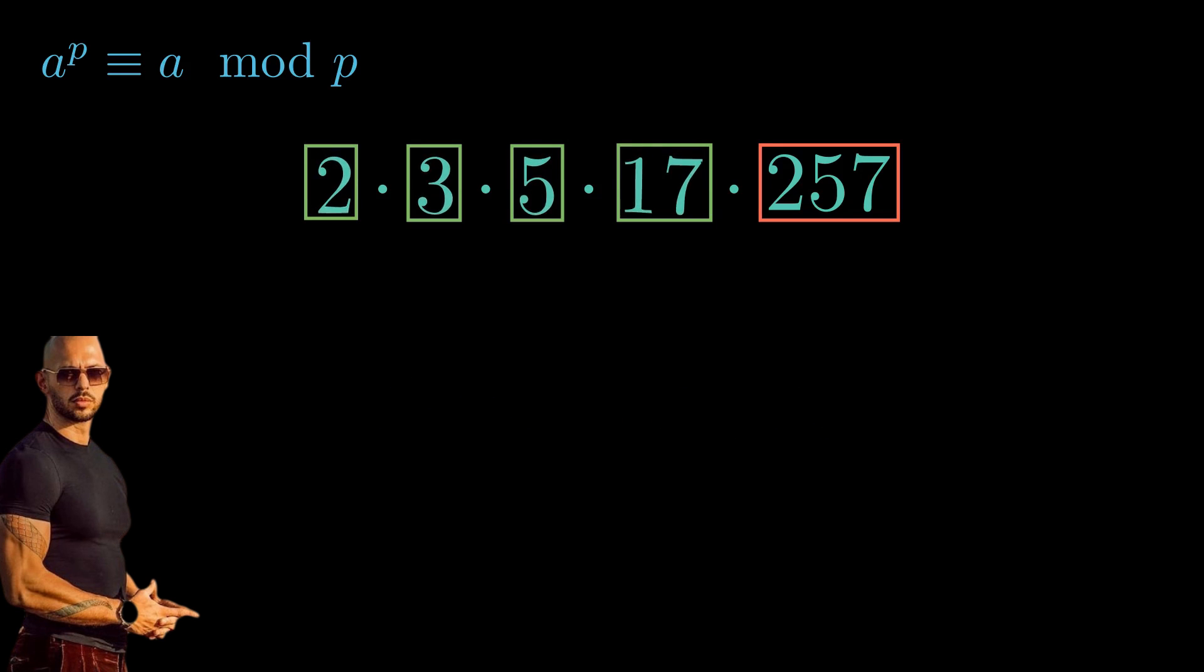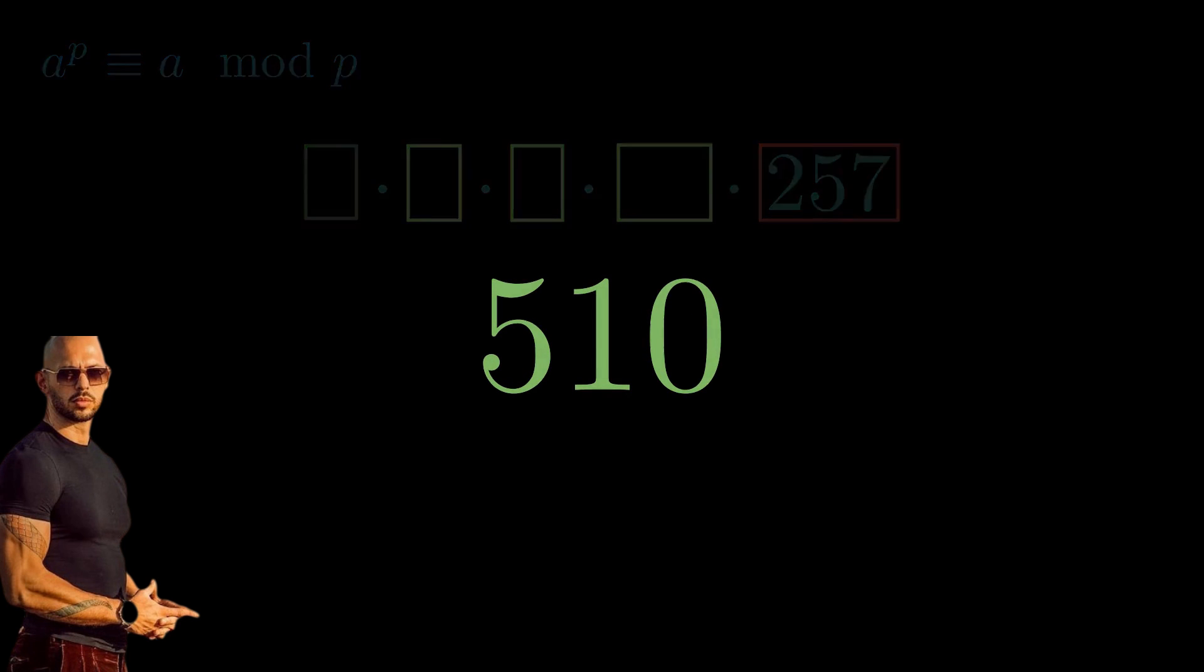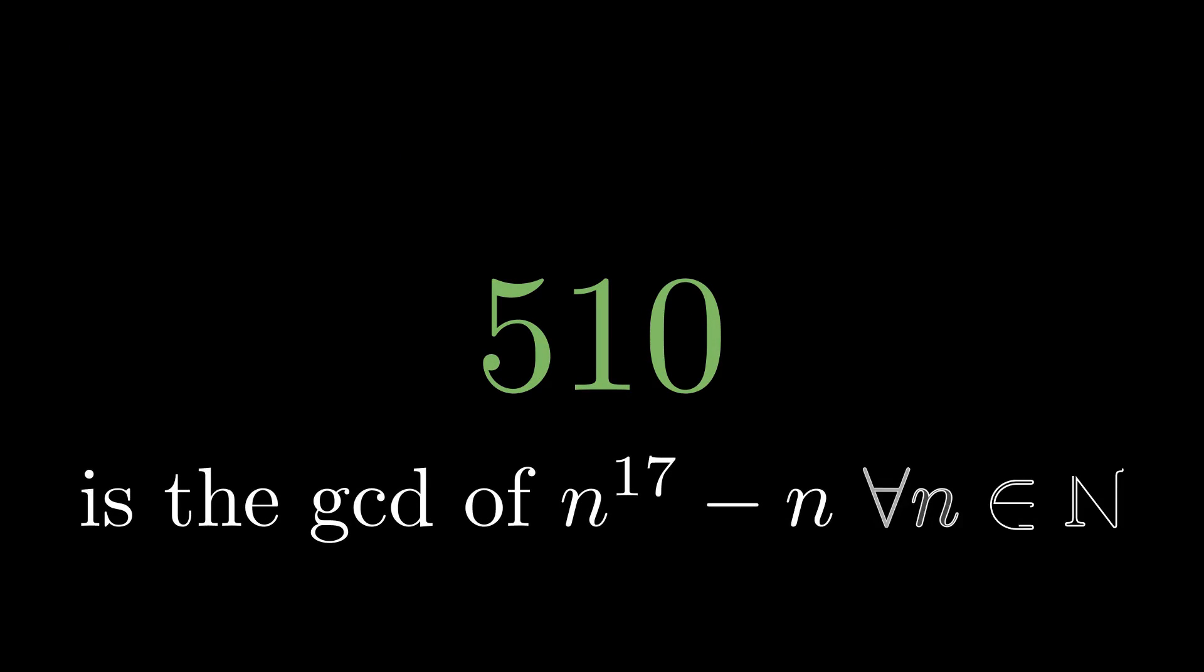In the end, our greatest common divisor is the product of the numbers we boxed in green, which is 510. I hope you found this problem as exhilarating as I did.